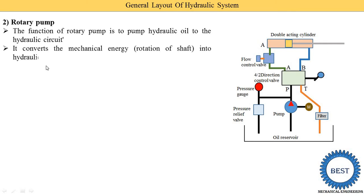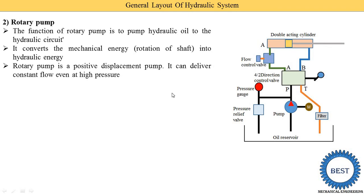The pump converts mechanical energy into hydraulic energy. Mechanical energy means the rotation of the shaft — in the pump, this shaft rotates and that is called mechanical energy. We generally have electrical energy available, so we supply electrical energy to the motor, which converts it into mechanical energy. This mechanical energy is supplied via the shaft to the pump, and the pump converts it into hydraulic energy. The rotary pump is a positive displacement pump that can deliver constant flow even at high pressure.